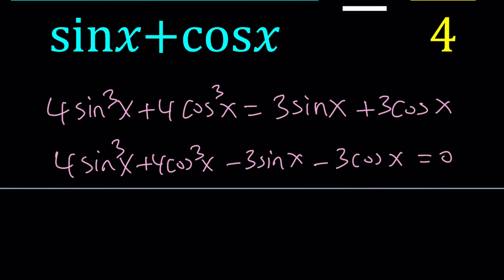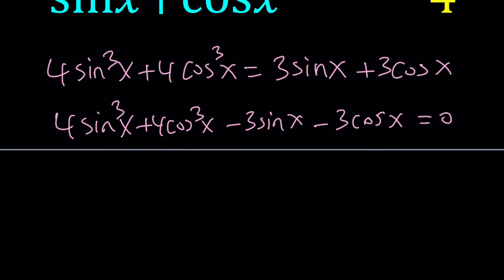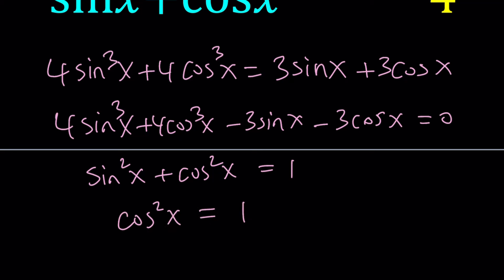We could try to factor, but it's not really going to help because we already cross-multiplied and got this expression. We could try to solve it as a cubic equation. One of the identities we can use is sine²x plus cosine²x equals 1, so we can express one in terms of the other — cosine²x as 1 minus sine²x. But we don't have a quadratic term; we only have a cubic and a linear term.